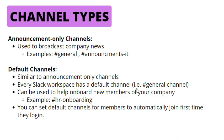Finally, similar to announcement-only channels, we have default channels. Every Slack workspace has a default channel, the main example being hashtag general. Default channels can be used to help onboard new members — for example, hashtag HR-onboarding. You can set default channels for members to automatically join the first time they log in, so new employees immediately see these channels when they first join. You might use default channels to welcome new people, direct them to the right channels, give them access to important information right away, or educate them about company culture, policies, and benefits. Note that the hashtag general channel cannot be converted to a private channel or shared with external organizations via Slack Connect.